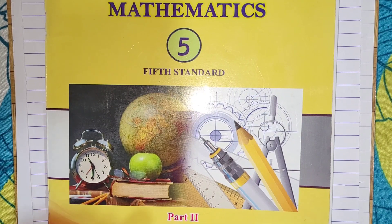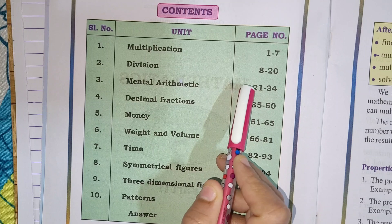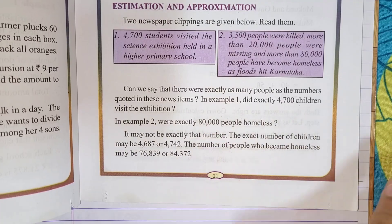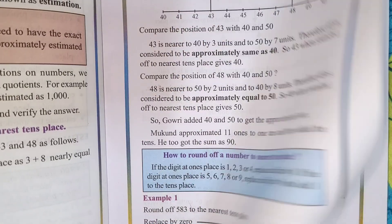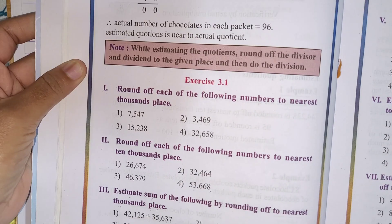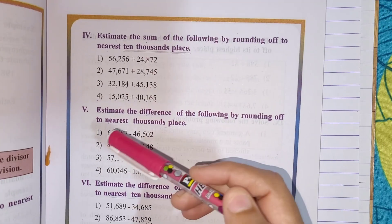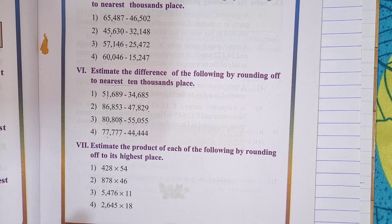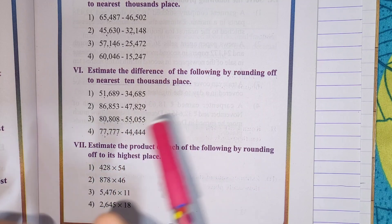Hi my lovely students, how are you all? I hope you all are doing well. So today in this class we are going to continue our same lesson of maths from your maths part 2 textbook, that is mental arithmetic. So open page number 21, chapter number 3 mental arithmetic. Children, as you know, we have already started this lesson and solved many sums from exercise 3.1. We solved the 1st, 2nd, 3rd, 4th, 5th and 6th sums in the previous videos. If you haven't seen those videos, you will get the link in my description box. Just go and check it out.